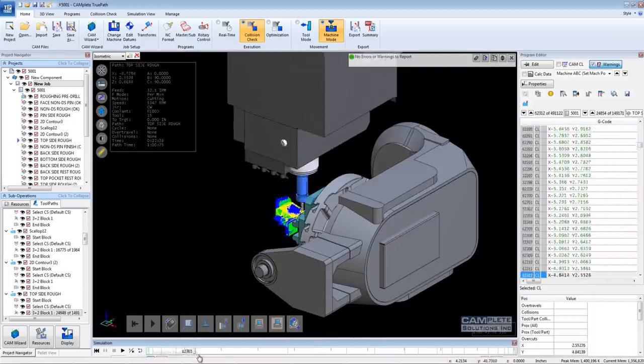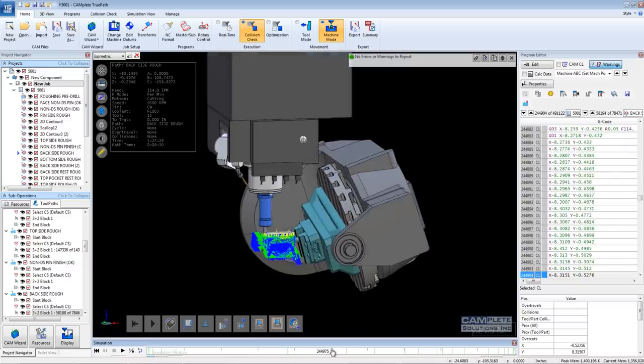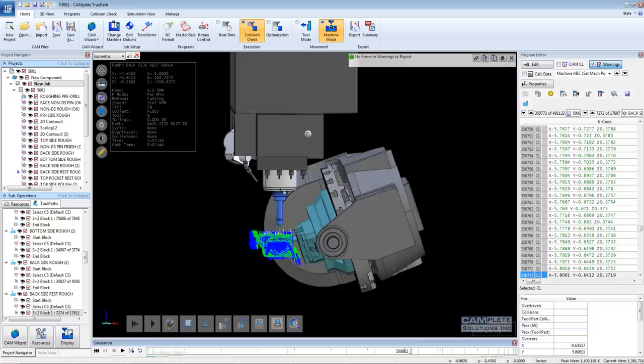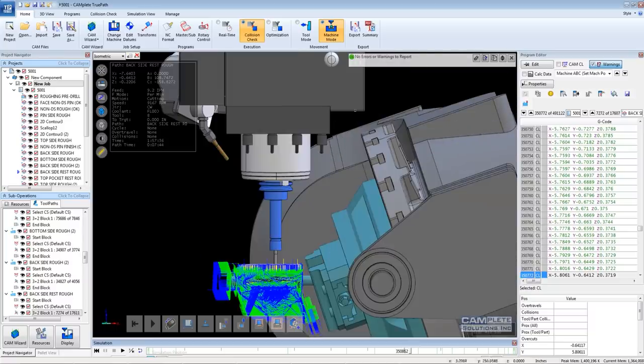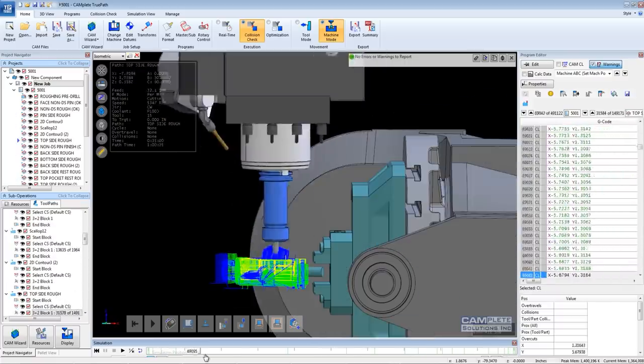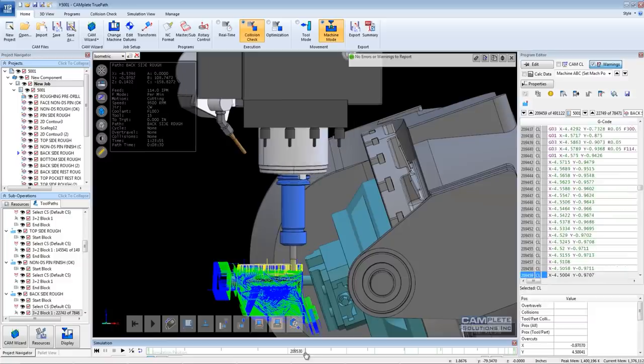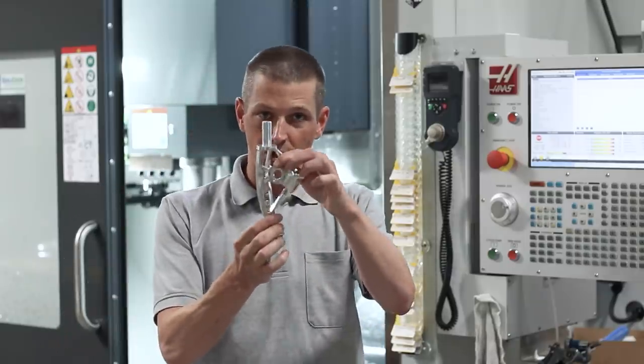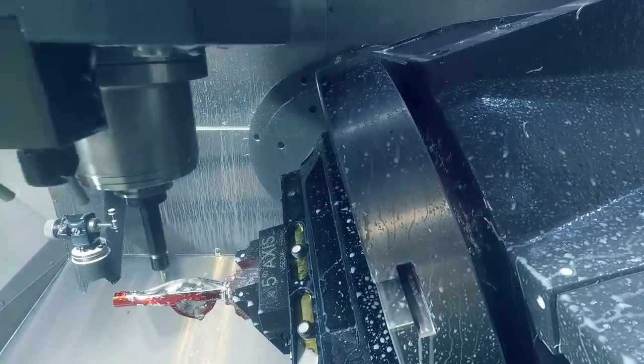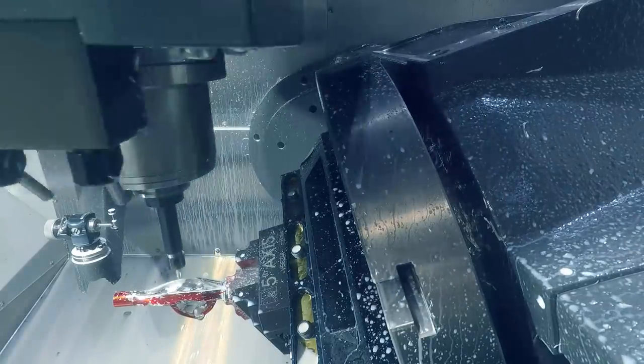And it was the simulation in Camplete TruePath here that really brought this home for us because this was a really long cycle time. And using Camplete gave me the confidence to know that we could walk away from the machine and let it run, whether we're here in the shop or whether we've left, and we'd end up with a part that was free of gouges and, most importantly, free of any machine collisions. So much of this part was done at what's called B90 when it's tipped over. And B90 often puts the spindle housing really close to your trunnion platter.